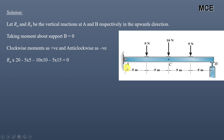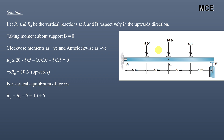The moment of vertical reaction Ra about point B is Ra × 20, which is clockwise. The moment of 5 N about B is 5 × 5 m, the moment of 10 N about B is 10 × 10 m, and the moment of the other 5 N about B is 5 × 15 m. The moments due to the three concentrated loads are anti-clockwise. This gives Ra = 10 N, acting upward.